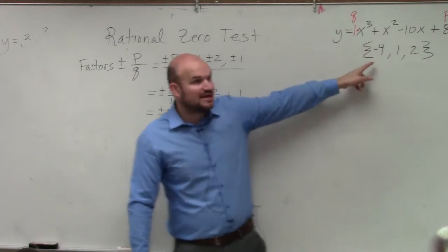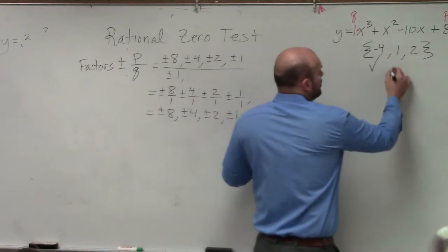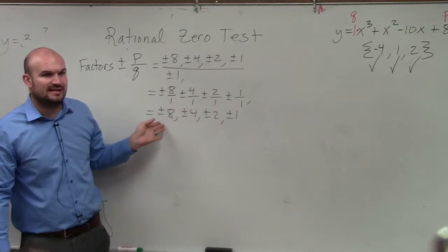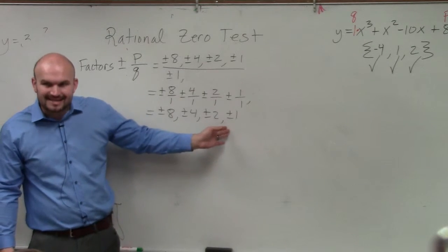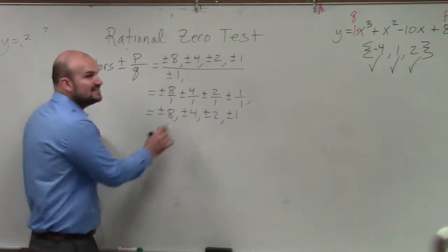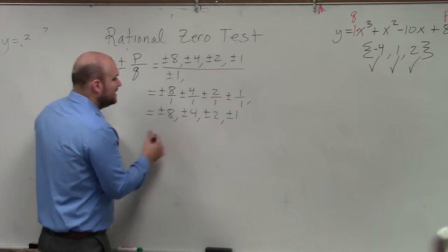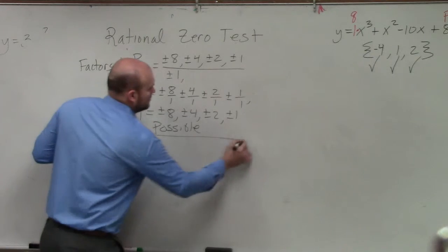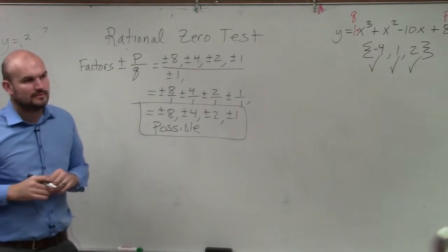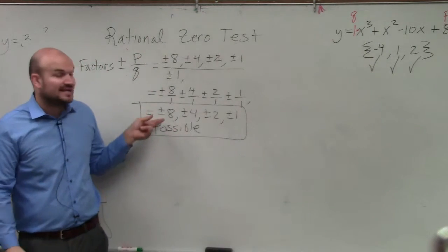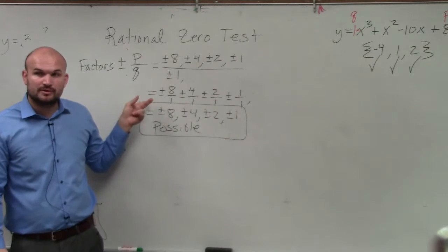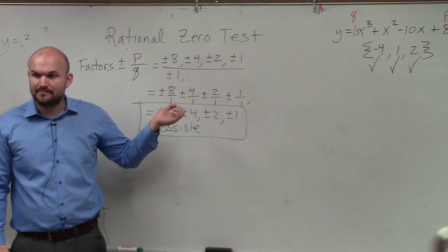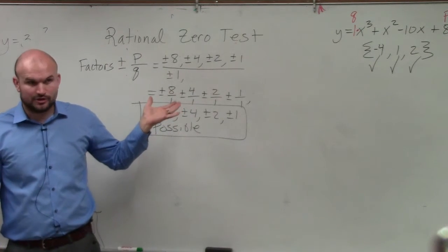We know what the rational zeros are. The rational zeros are negative 4, 1, and 2. Are those all numbers that are represented in this rational zero test? Yes. And that's exactly what it tells you. It doesn't tell you what the zeros are. It just tells you what the possible zeros are. And that's it, though. For your answer, that's all you guys would include, is just the plus or minus of all the possible zeros. OK? That's all you're doing.